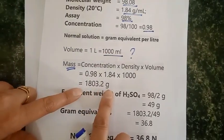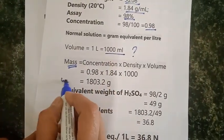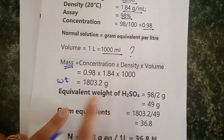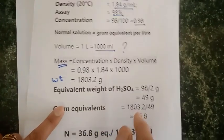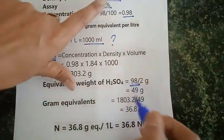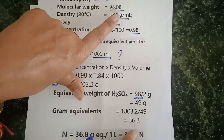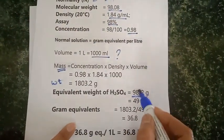I get this much of weight. Now to calculate the equivalent weight for H2SO4, it is 98 by 2 because the molecular weight is 98 divided by the n factor, which is 2.